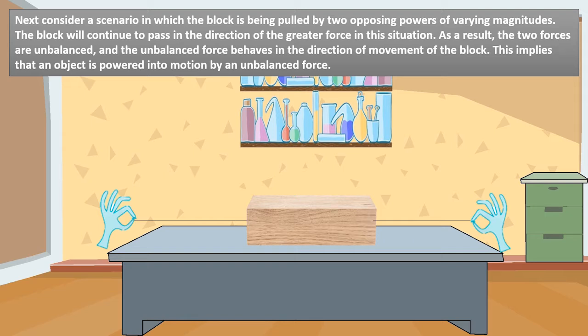Next, consider a scenario in which the block is being pulled by two opposing powers of varying magnitudes. The block will continue to pass in the direction of the greater force in this situation. As a result, the two forces are unbalanced and the unbalanced force behaves in the direction of movement of the block. This implies that an object is powered into motion by an unbalanced force. There are few more examples like this. Go through them on your own and if you have faced any problem, feel free to ask me.